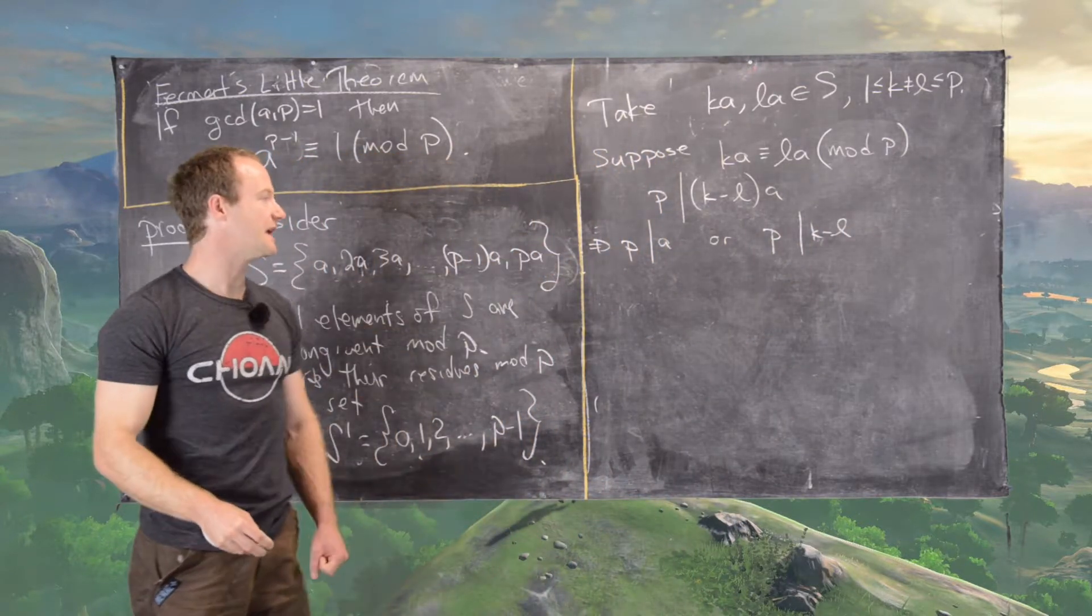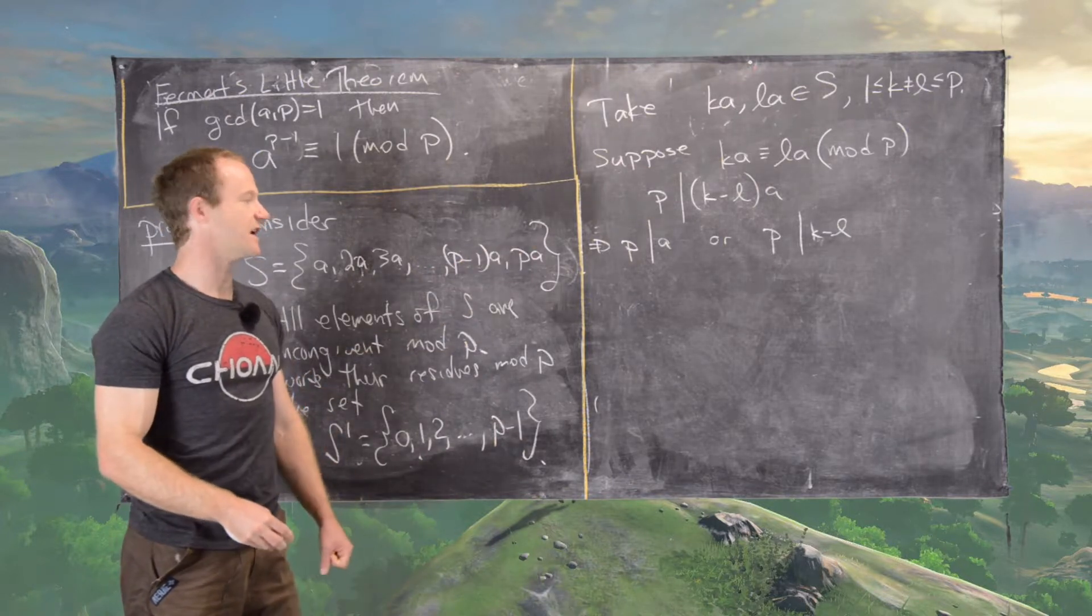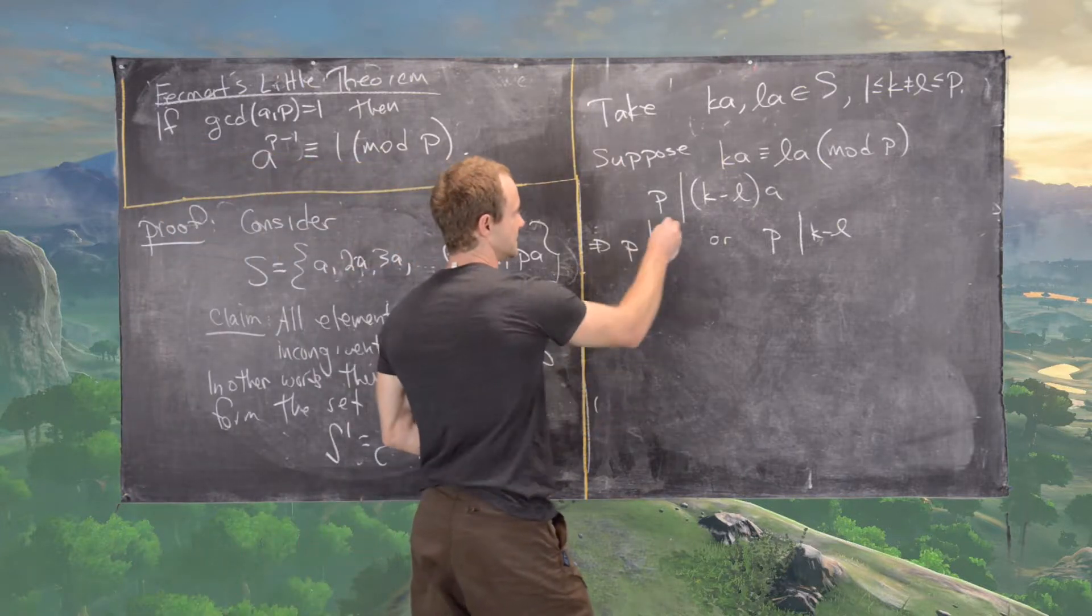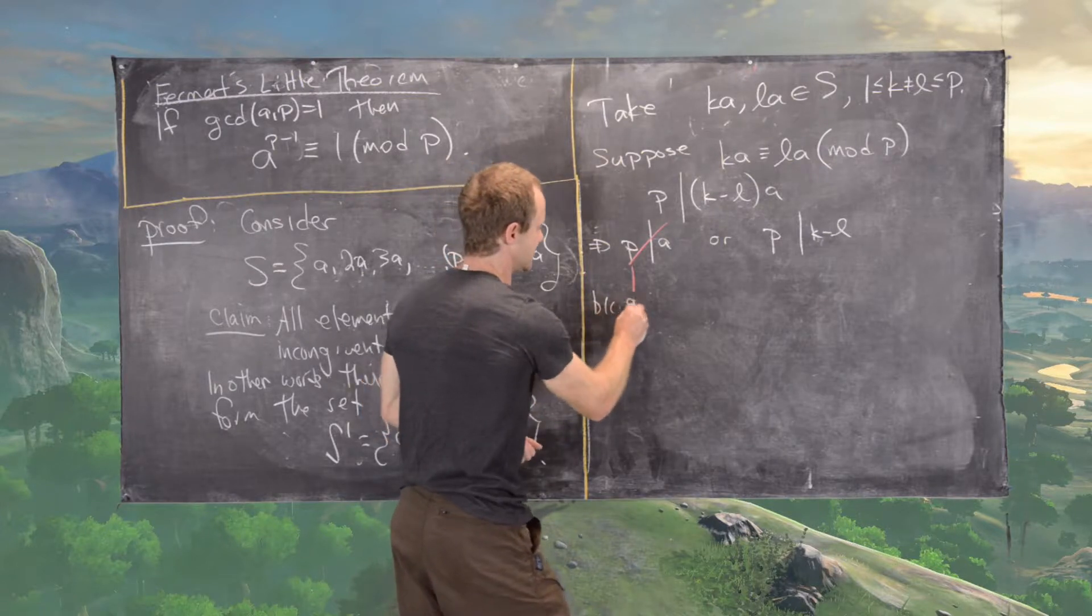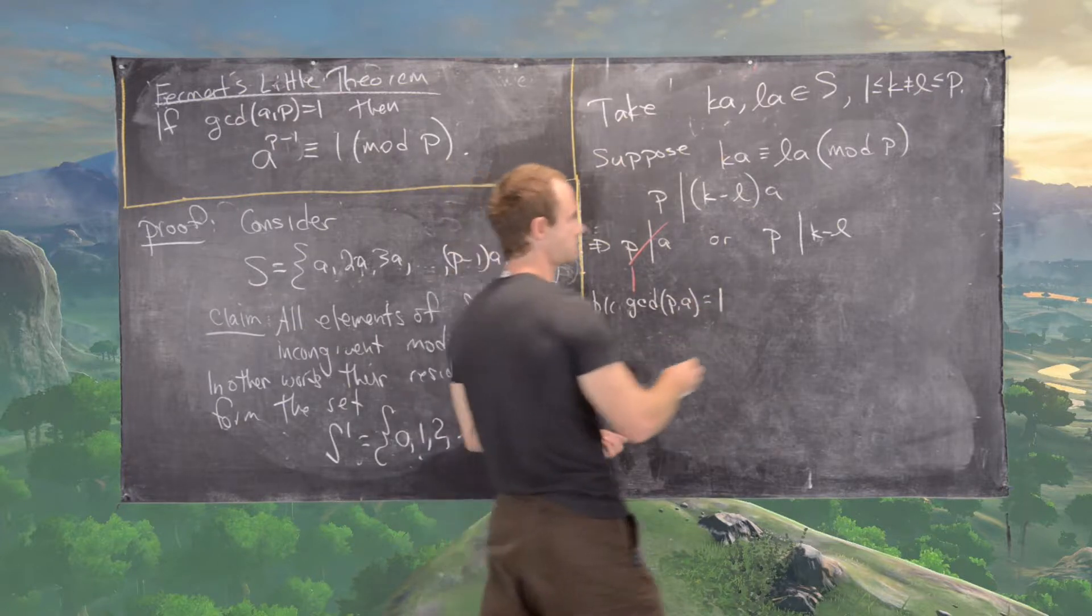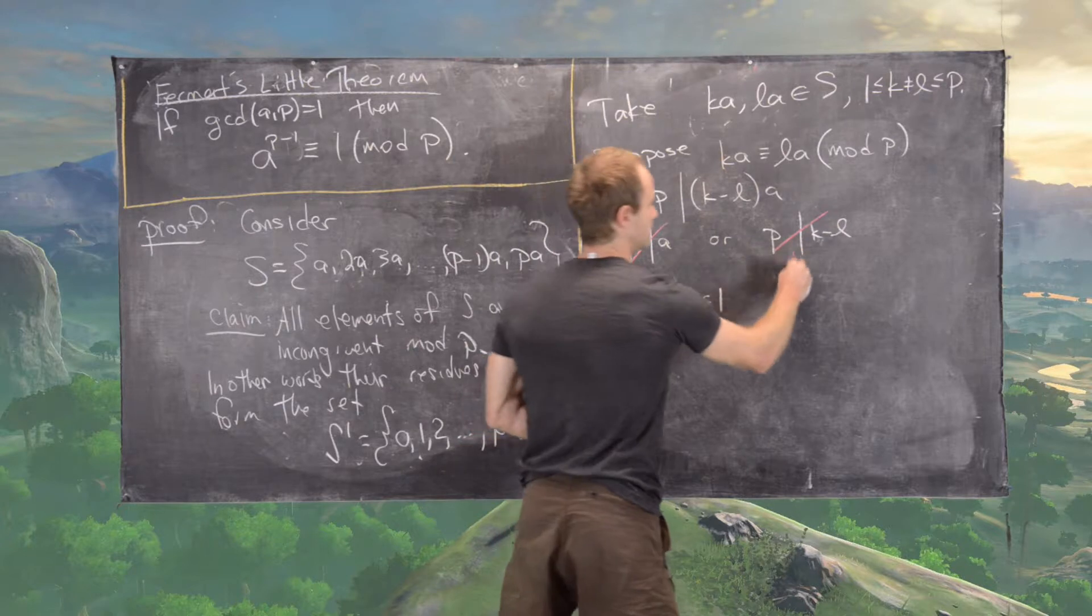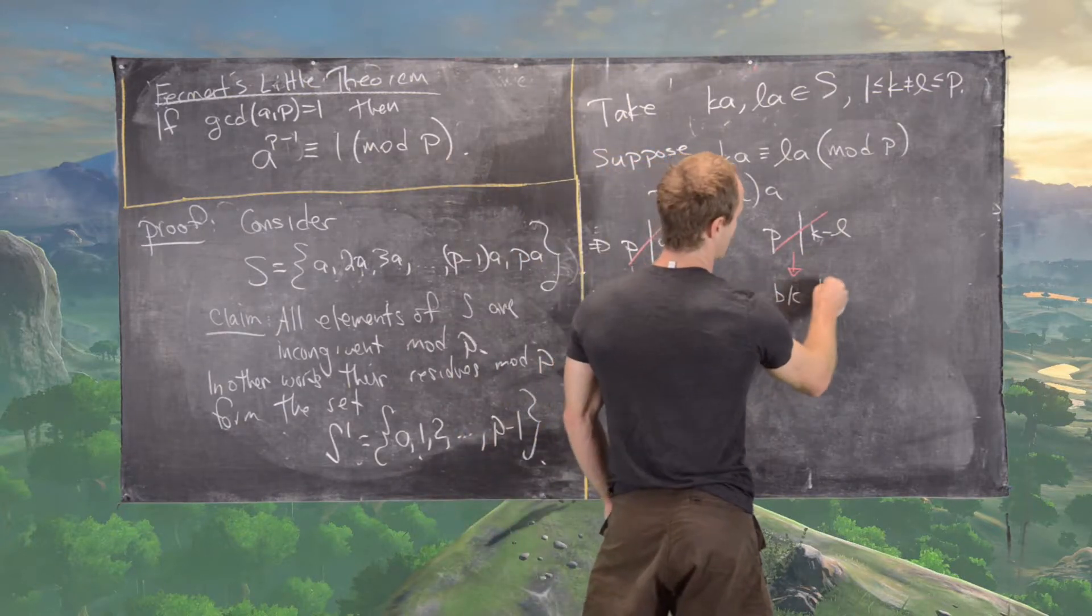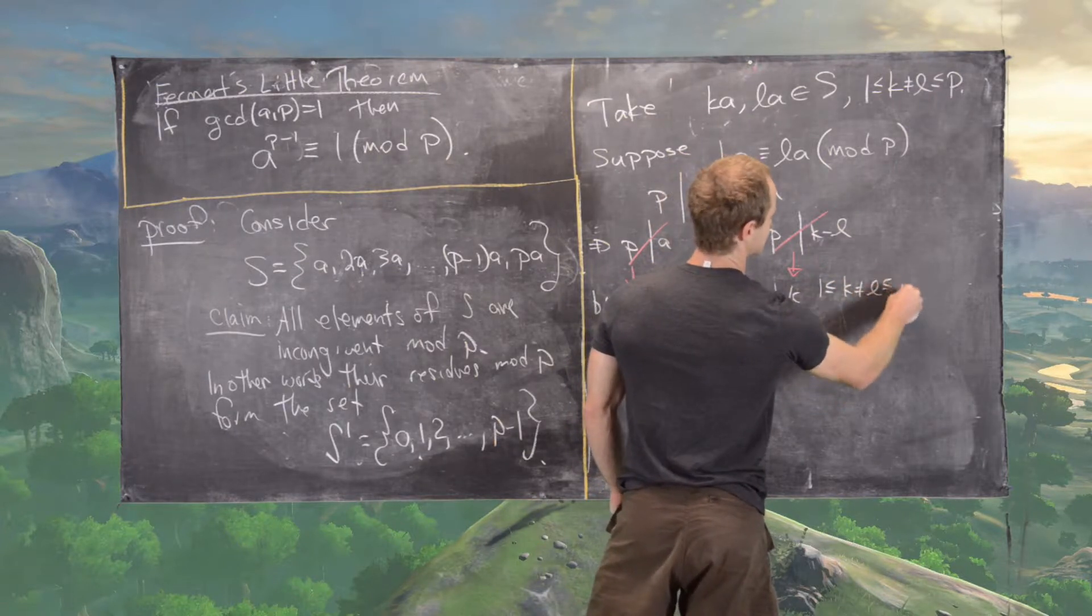Now we know that P cannot divide A because the GCD of P and A is 1. So this is impossible because GCD of P and A equals 1. And then this is impossible, and that's because 1 is less than or equal to K, which is not equal to L, which is less than or equal to P.